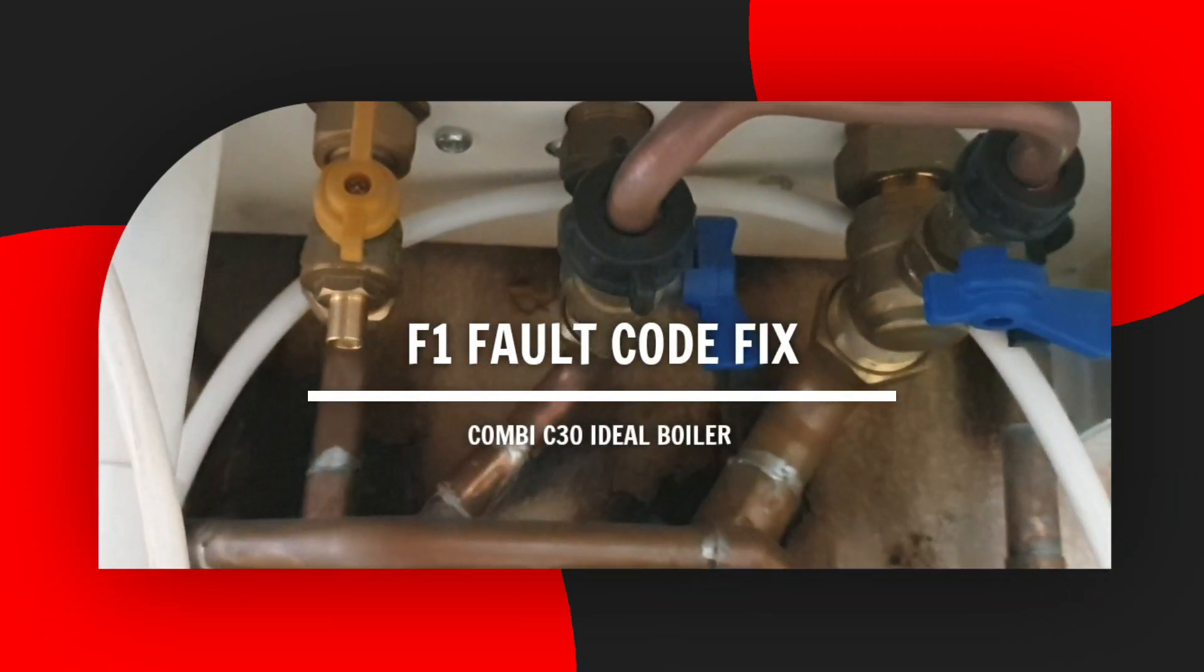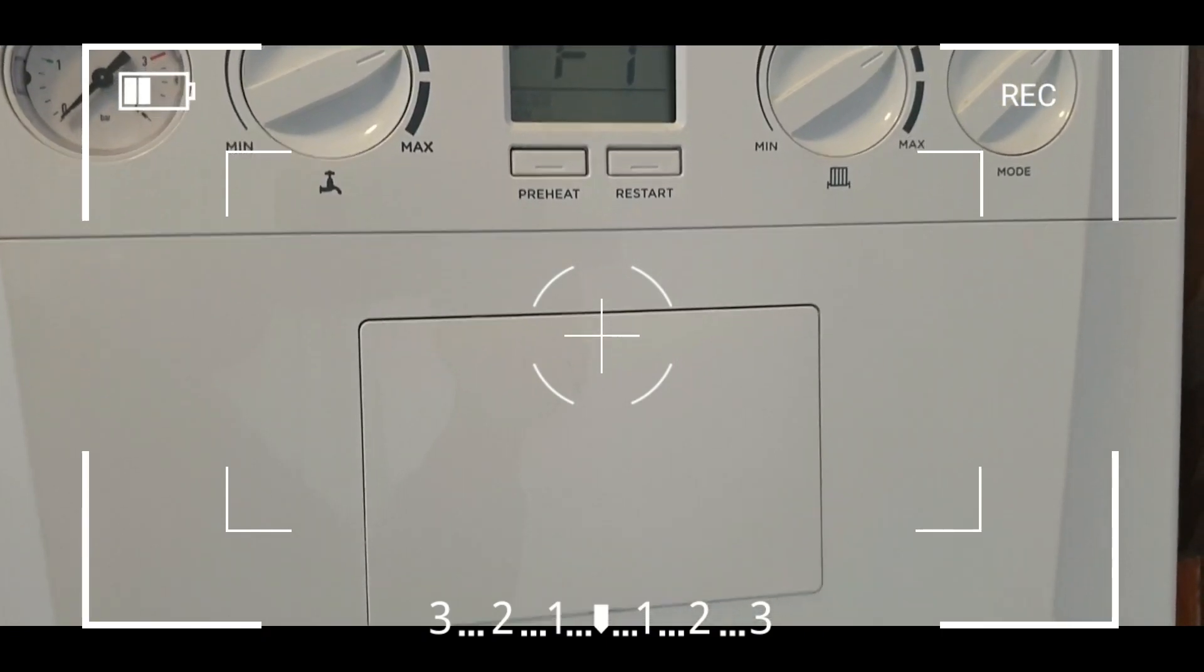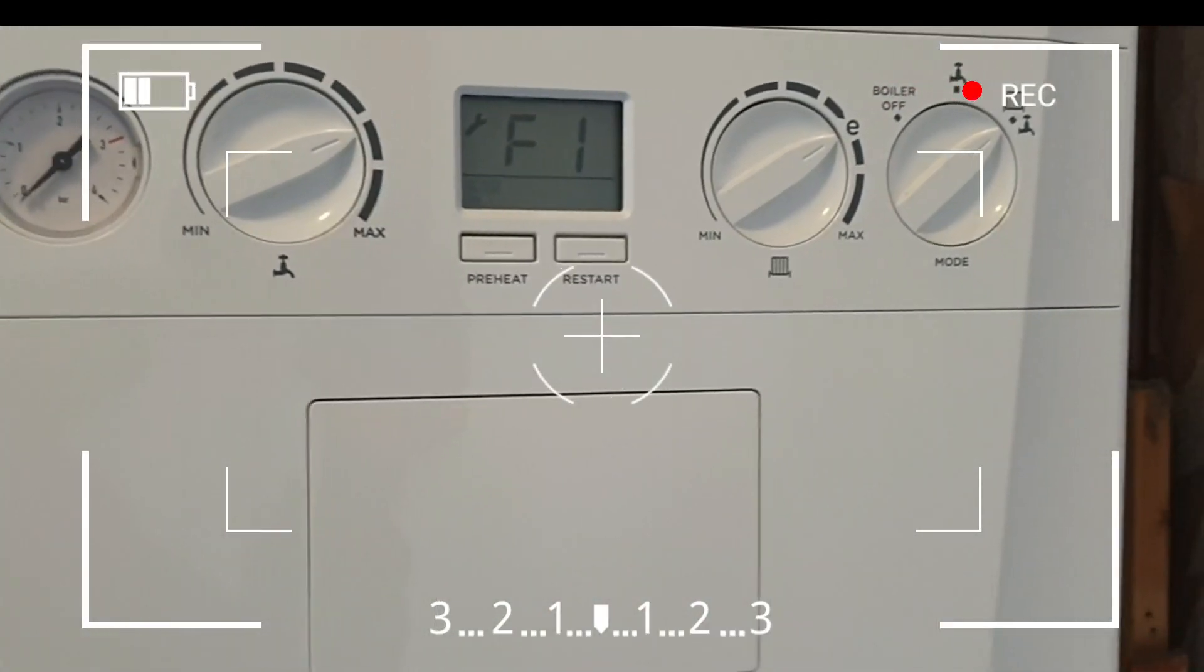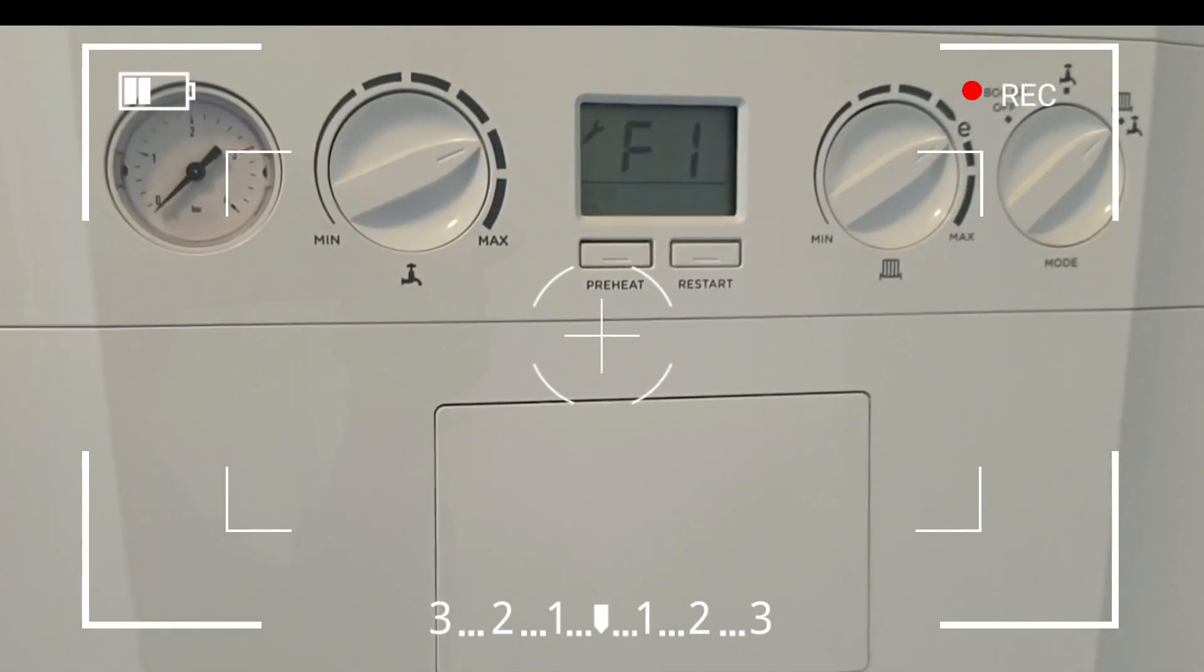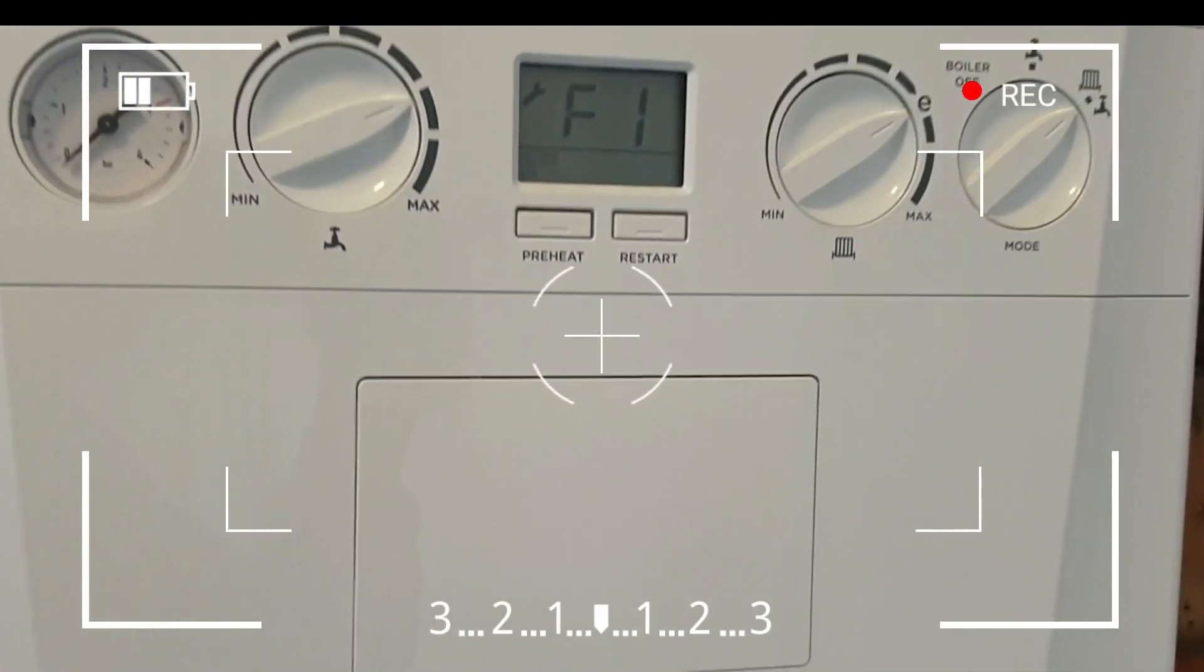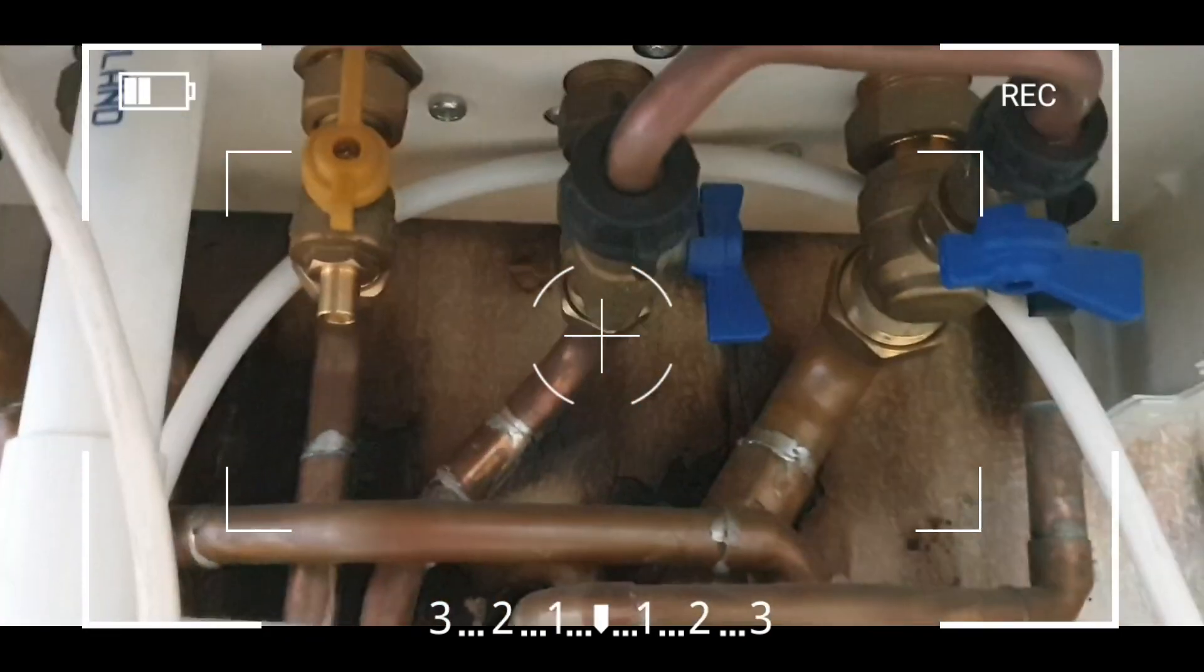What we want to do is flip the two blue valves to positions that would make the needle move to the one bar pressure position to get rid of the F1 fault code. Make sure your boiler is turned off before you perform this fix.